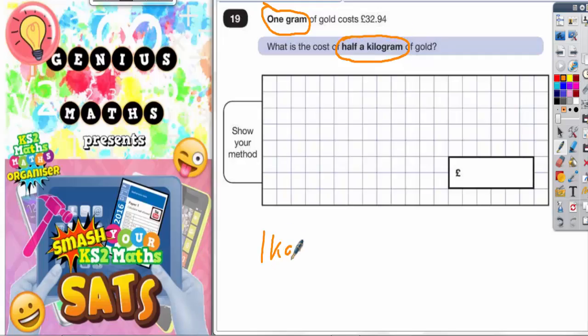Well, remember one kilogram is worth 1,000 grams. So half a kilogram is going to be worth half of this, which is 500 grams, because half of 1,000 is 500 grams.